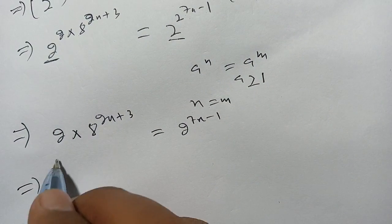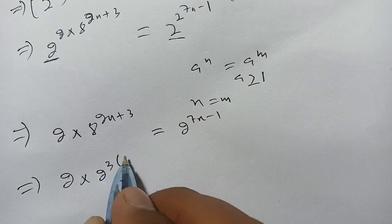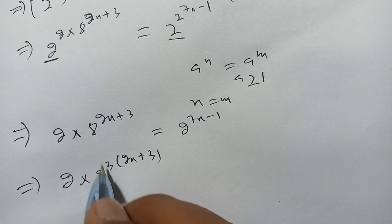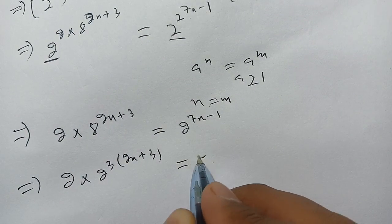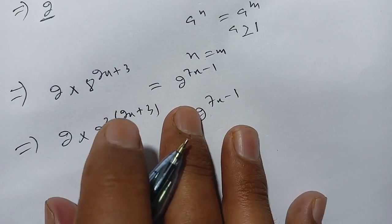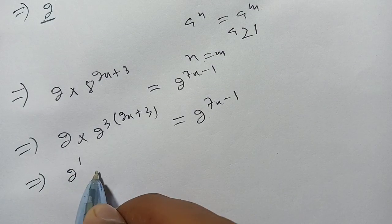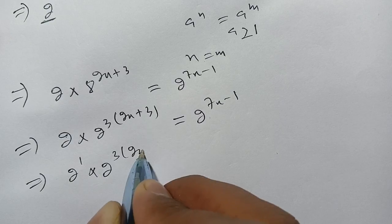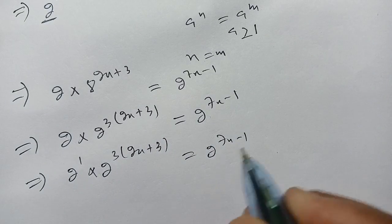Now we write 8 as 2³, so the left side becomes 2 × (2³)^(2x+3) equals 2^(7x-1). We rewrite it as 2^1 × 2^(3(2x+3)) equals 2^(7x-1).